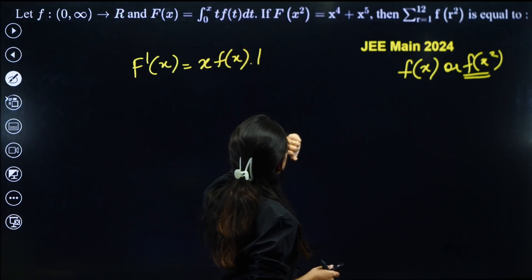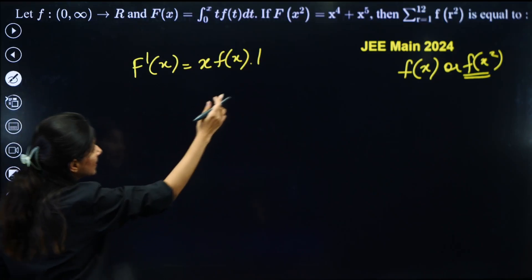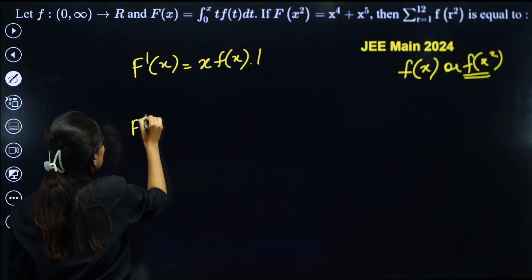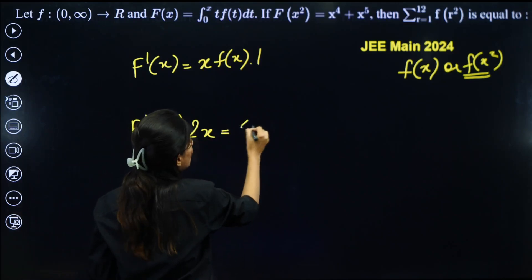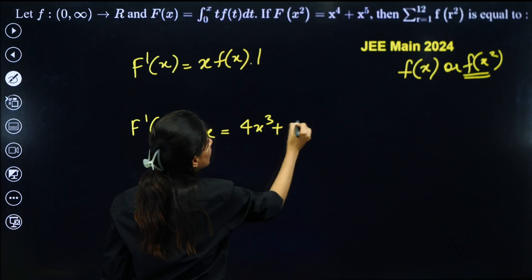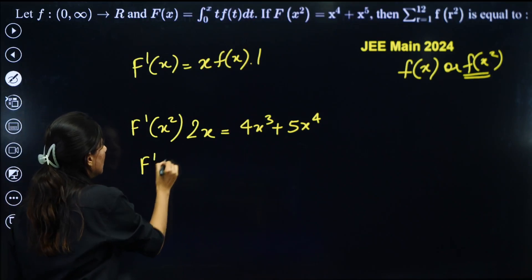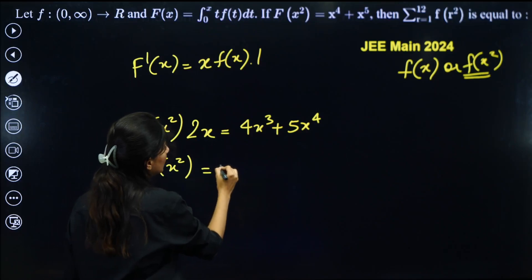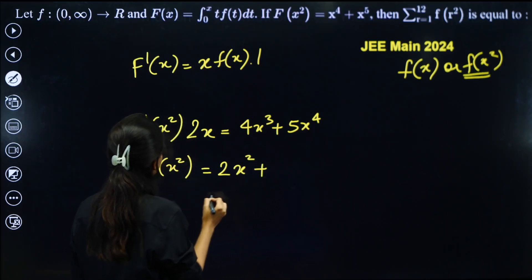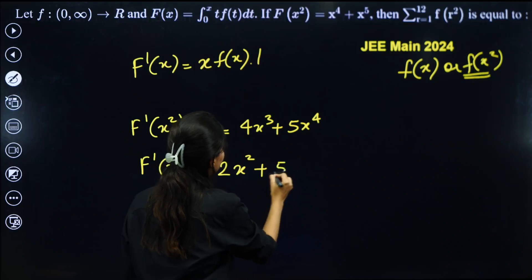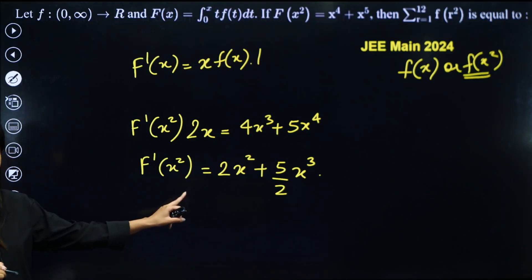And from here, can you see that this is f(x)^2? So to make it similar, what I can do is I can differentiate the second equation. If I do that, what do I get? f'(x)^2, let's not forget this, 2x, chain rule. 4x^3 + 5x^4. This 2x can go in the denominator so that it will become 2x^2. xx cancel. x^2 + we are going to have 5/2·x^3. This is your f'(x)^2.